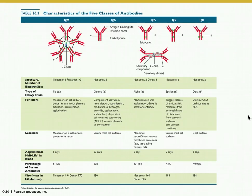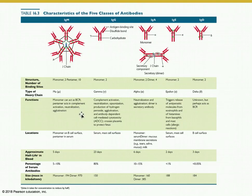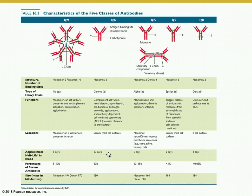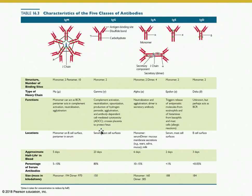You won't be expected to know all the details of these five classes, but they are summarized in Table 16.3 in your text. Here is the visual representation of IgM — one of the first produced, active in complement activation, neutralization, and agglutination, but a fairly small percentage of serum antibodies. IgG makes up to 80% of serum antibodies, clearly the dominant class and the longest-lived, with an approximate half-life of 23 days. IgG is involved in all those functions mentioned, and notably is the type of antibody that can cross the placenta to protect the fetus while in utero.